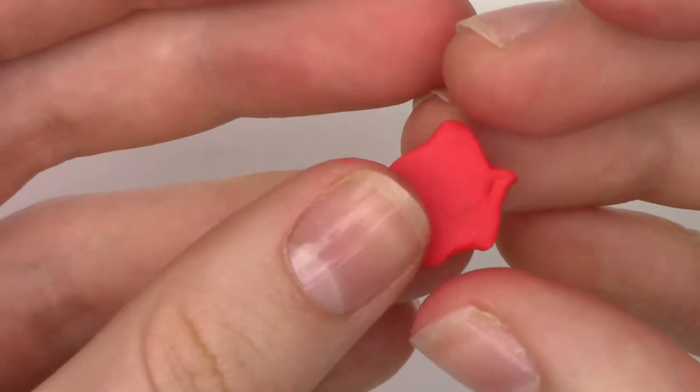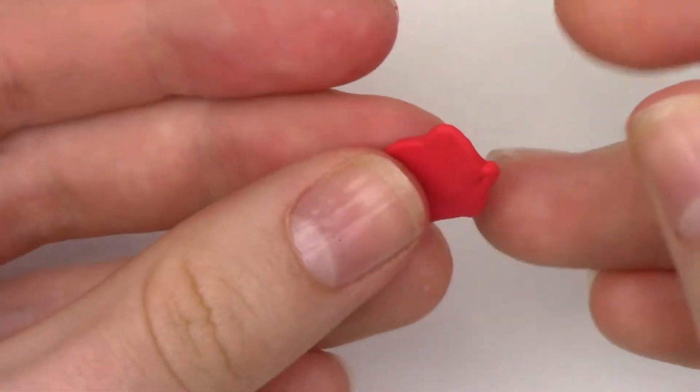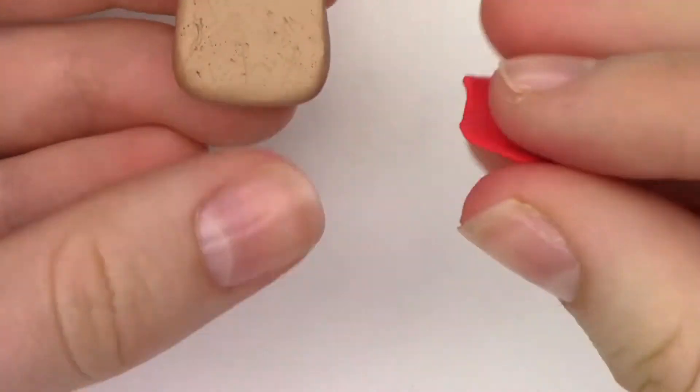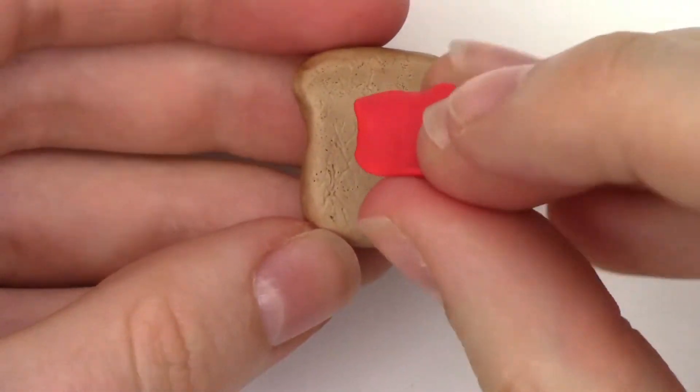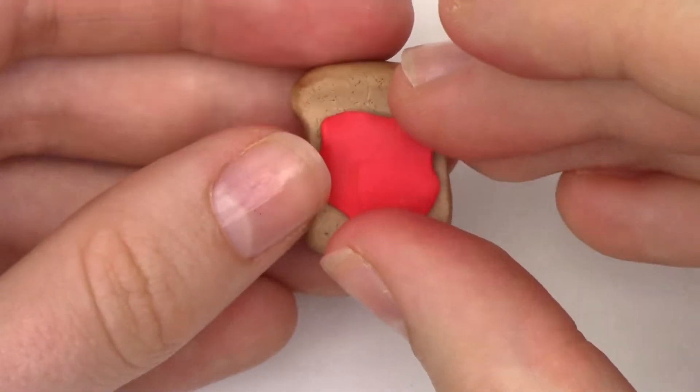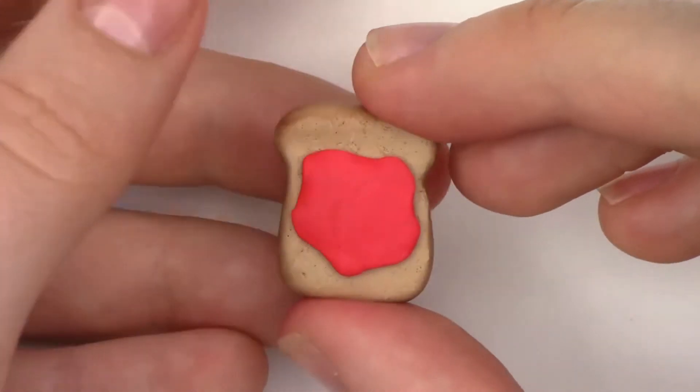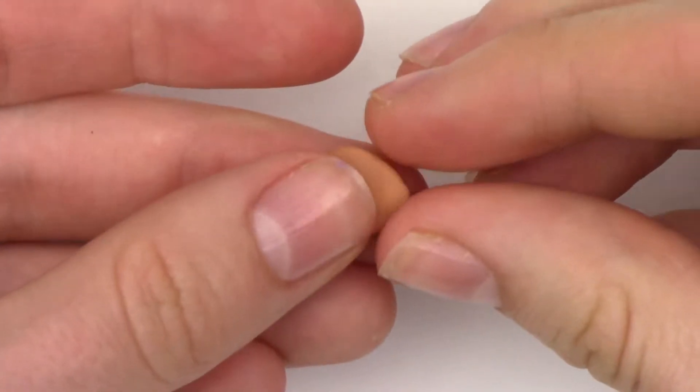Now I'm taking a small piece of red clay, and this is for the jelly. I'm just shaping it into a very sloppy circle and pressing that onto my little loaf of bread. And I did the same thing with the peanut butter.